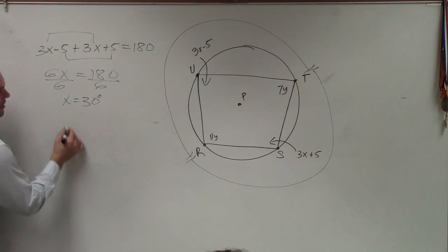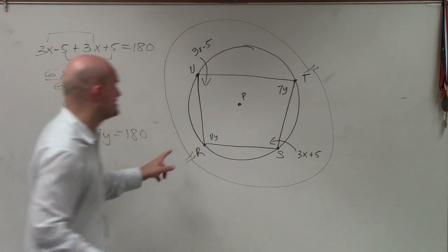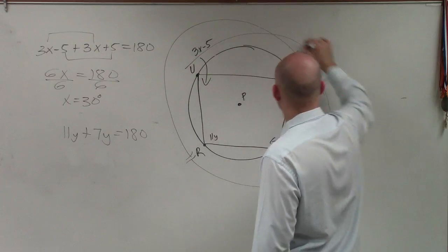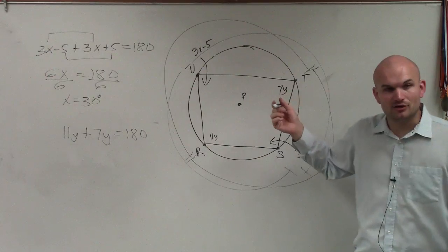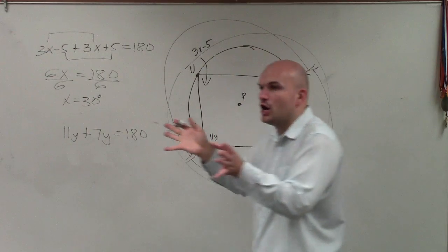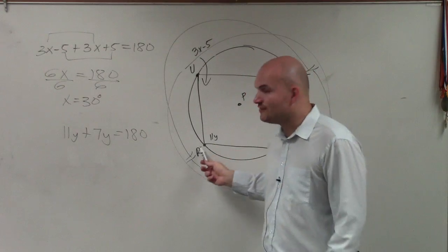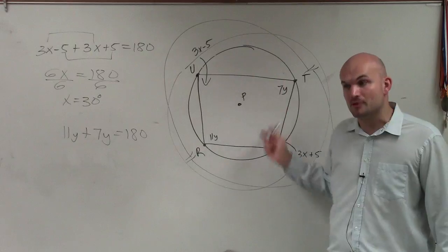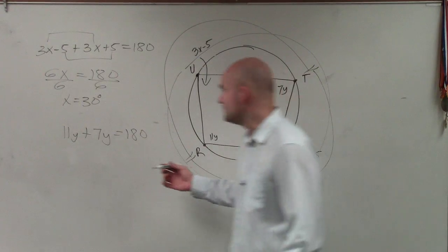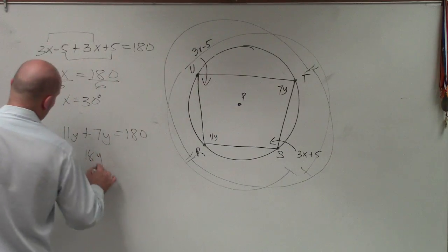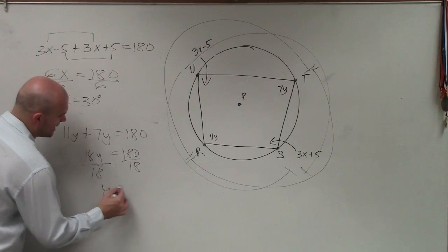Now let's figure out y. 11y plus 7y equals 180. Again, you can see that here, it goes from there to there. So these two angles, when they expand out, their arcs add up to 360. But remember, when finding the measurement of an angle when its vertex is on the circle and its two endpoints are in the circle, it's going to be one-half that. So that's why 11y plus 7y equals 180. Add them up. 18y equals 180. Divide by 18. y equals 10.